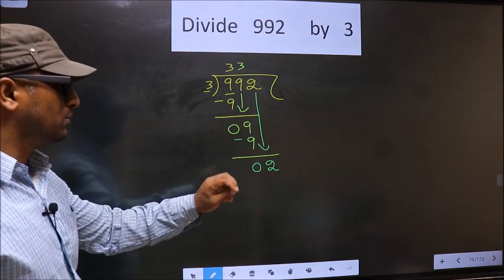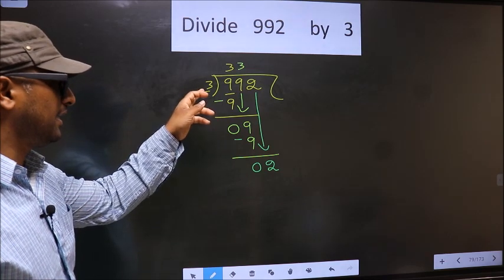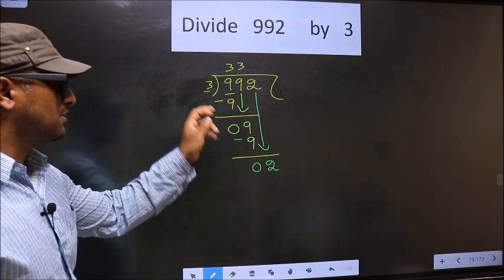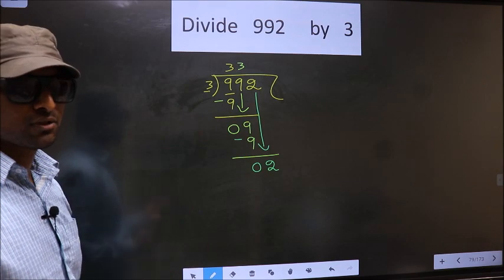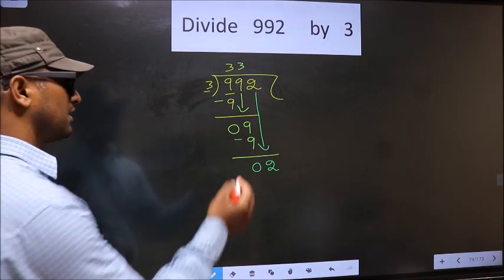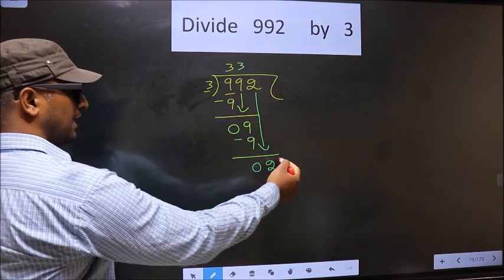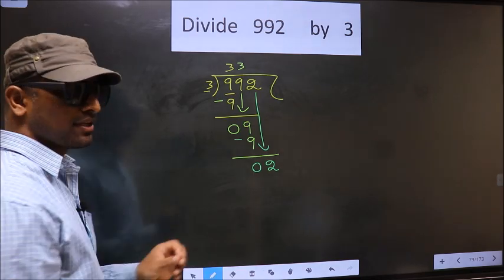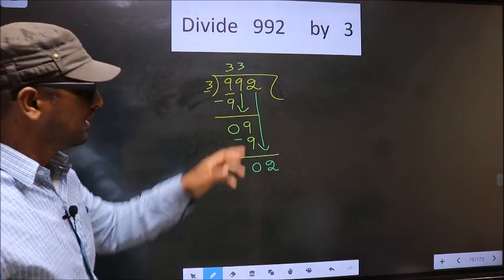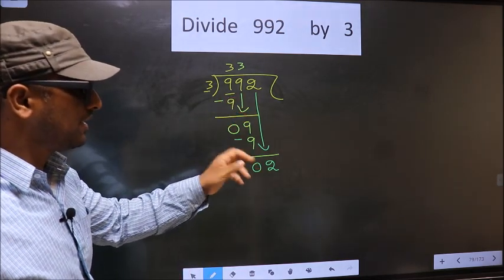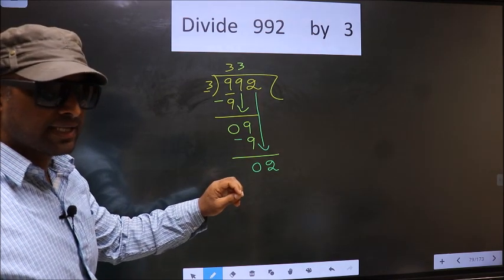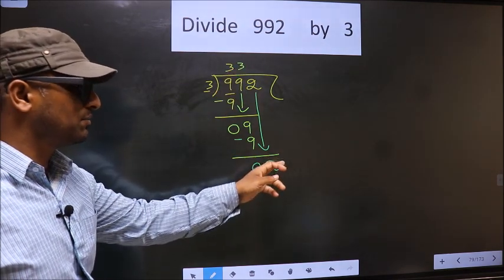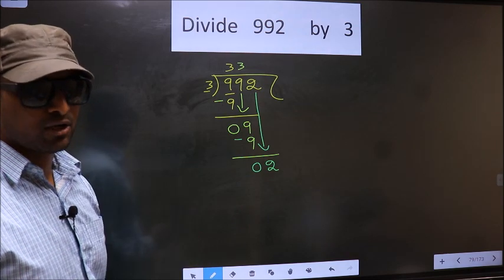Here we have 2, and here 3. 2 is smaller than 3. So what many do is they put a dot and take 0 here, which is wrong. Just now you brought the number down, and in the same step you want to put a dot and take 0, which is wrong.